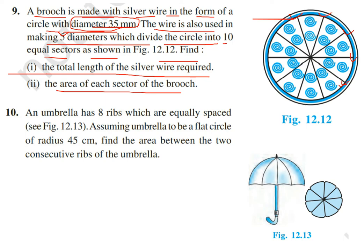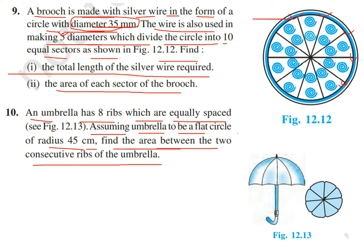Question number 10: An umbrella has 8 ribs equally spaced. Assuming the umbrella to be a flat circle of radius 45 cm, find the area between two consecutive ribs of the umbrella. Since there are 8 ribs, we simply need the area of one sector.